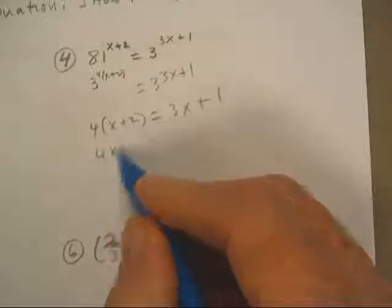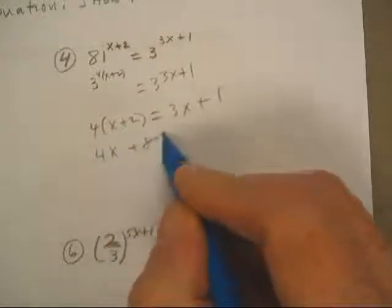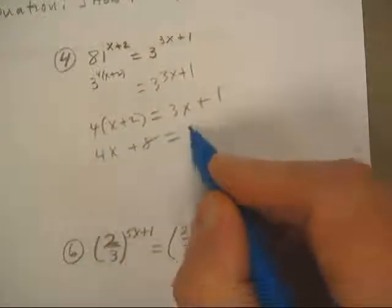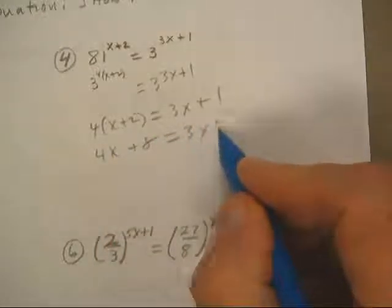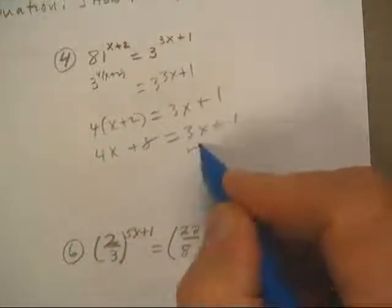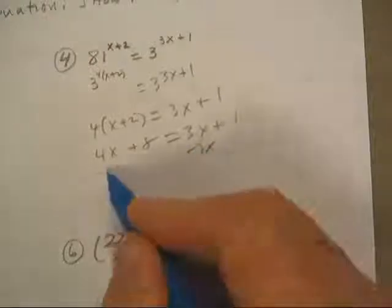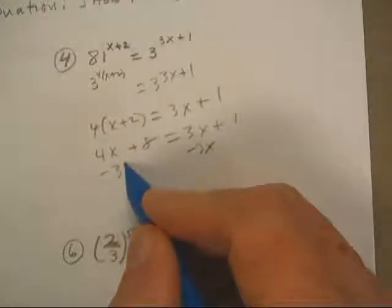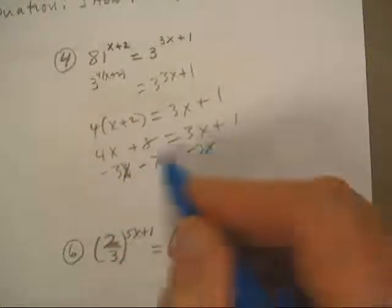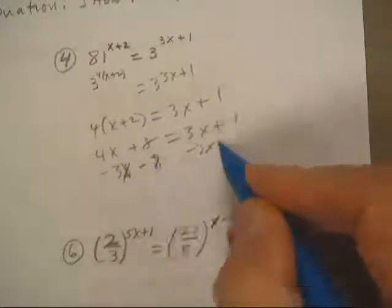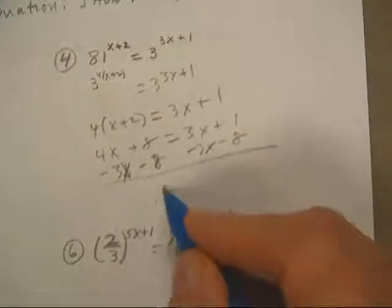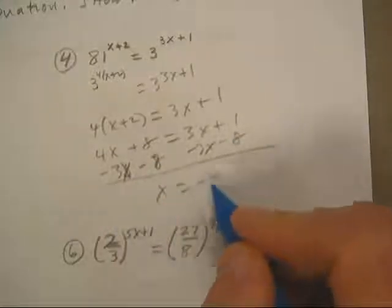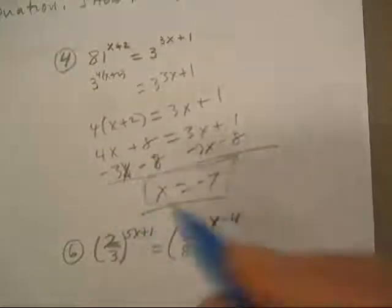Let's distribute that 4. Subtract 3x minus 8. x is negative 7.